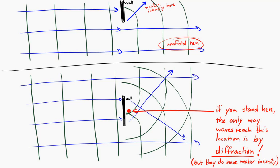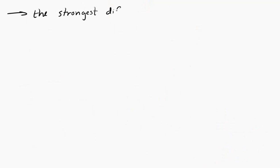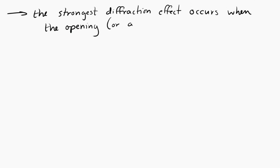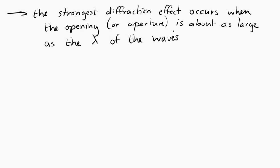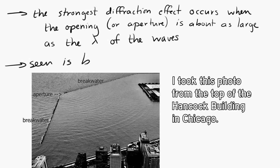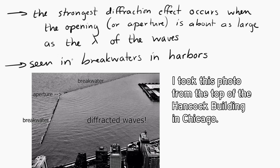There are many things that affect diffraction, but one key factor is that you get the strongest diffraction effect — the strongest bending of the waves — when the opening that the waves pass through is about as large as the wavelength of the waves. Another situation where you can observe this is in breakwaters. Breakwaters are walls in the water, often near harbors. When waves come in, the little apertures where ships pass through cause diffraction to happen.